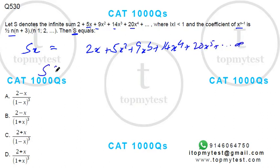If I subtract from this, you'll get s into 1 minus x should be equal to 2 plus 5 minus 2 is 3x, then you have 9 minus 5 is 4x squared, then 14 minus 9 is 5x cubed,